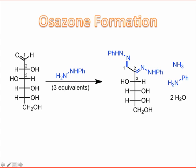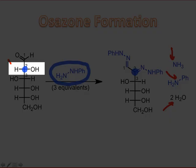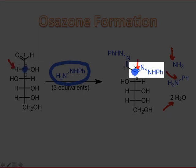Osazone formation occurs when a monosaccharide is exposed to three equivalents of phenylhydrazine, the molecule you see here. The mechanism that we draw for this process needs to account for the interesting side products observed: ammonia, aniline, and two equivalents of water. We also need to account for the apparent oxidation that takes place at carbon-2. Notice that it goes from possessing one C-H bond in glucose to having no C-H bonds and an additional C-N bond in the product.